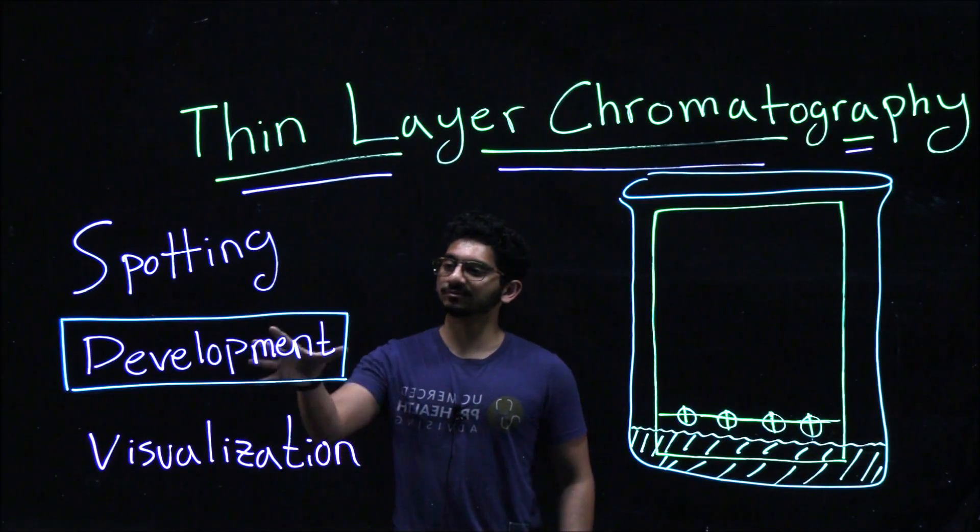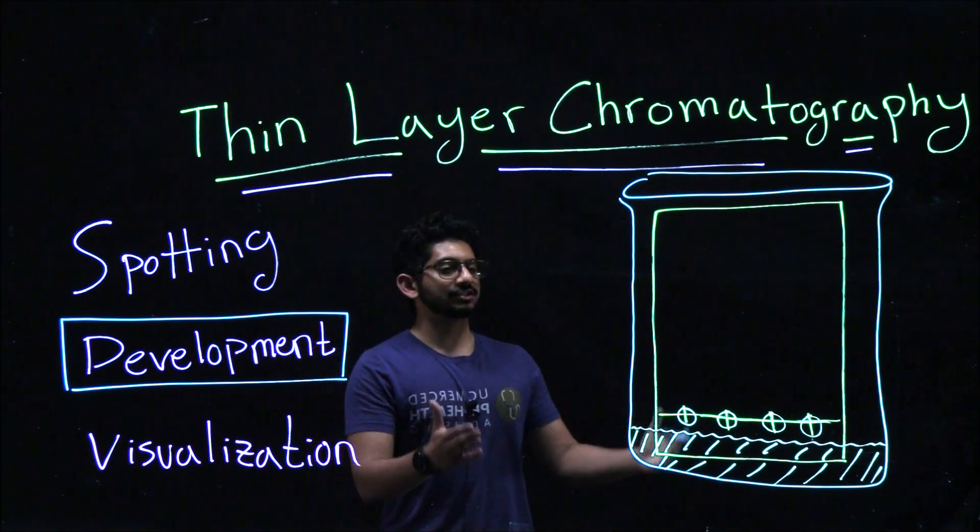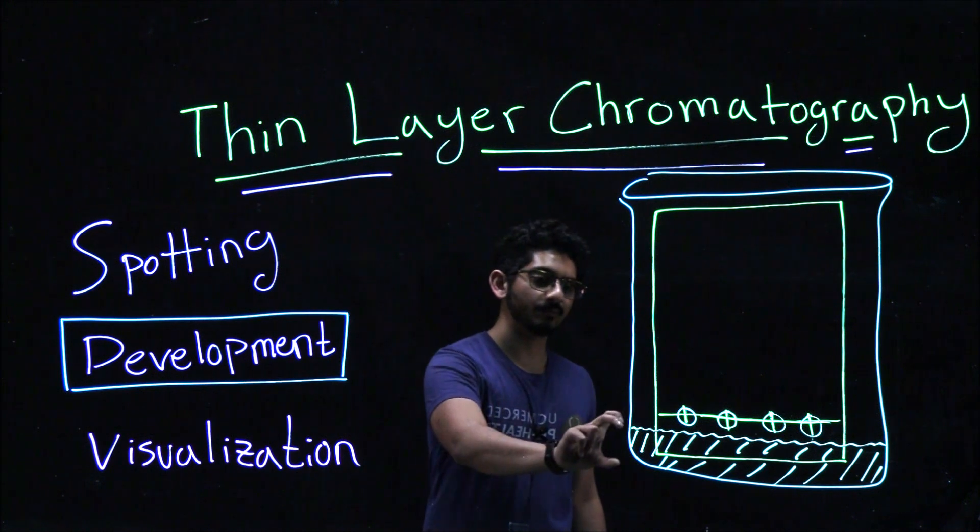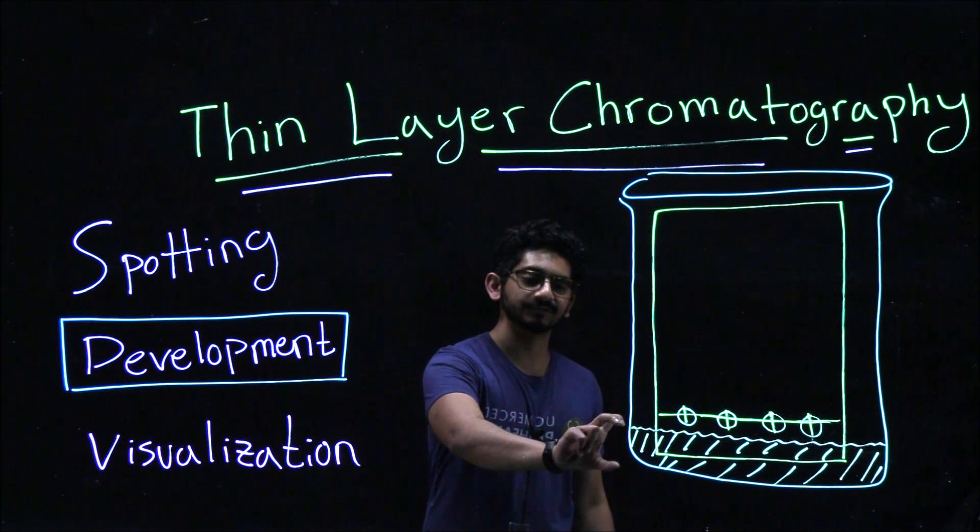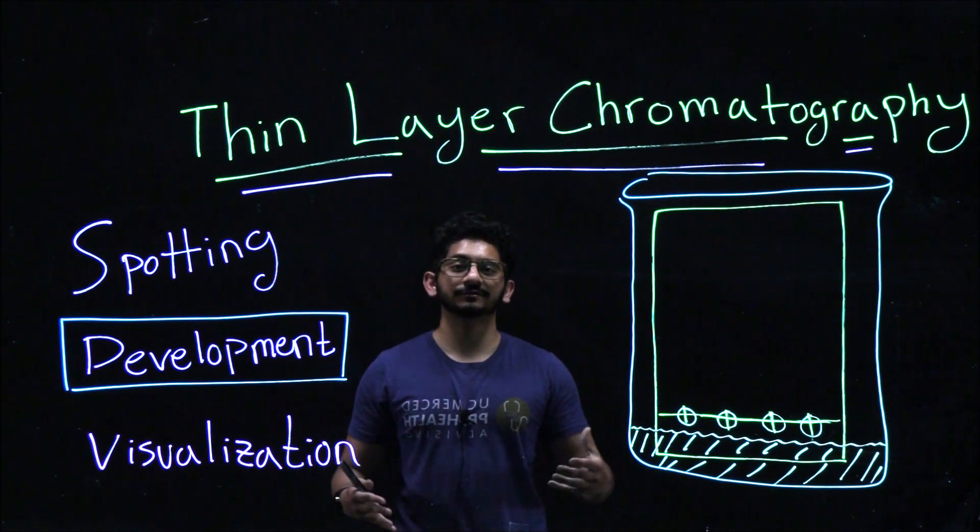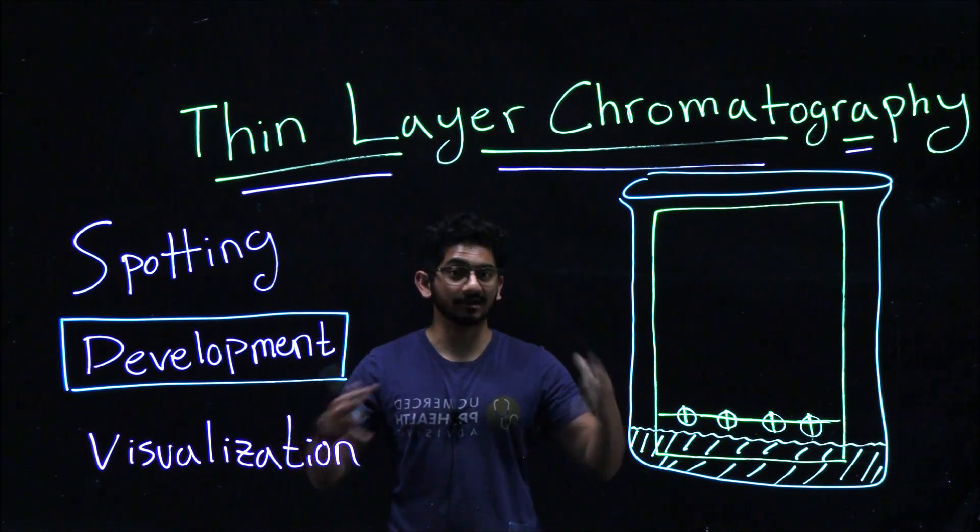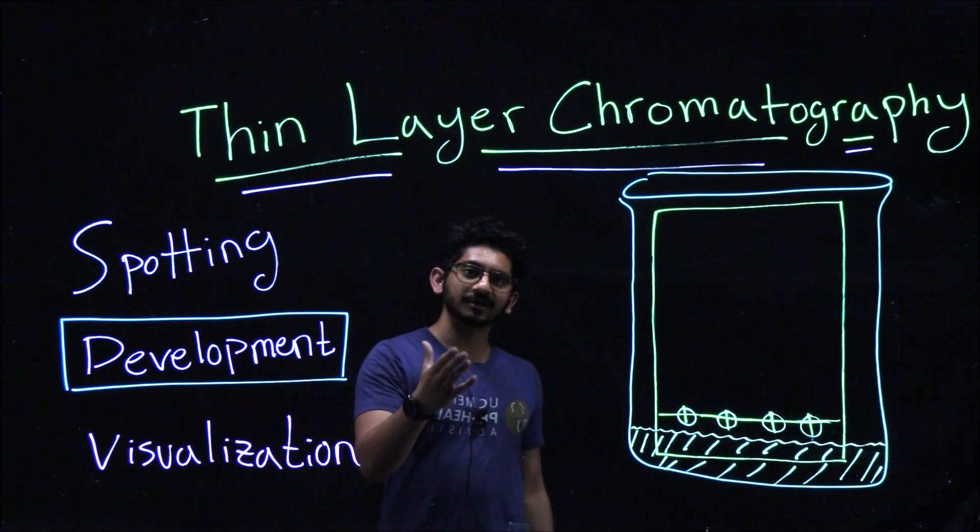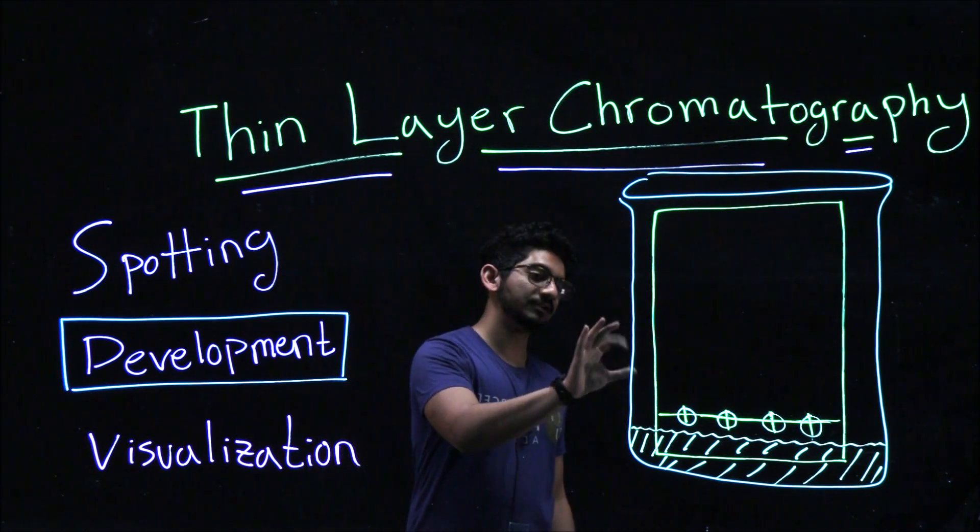The second part of our TLC is the actual development. We take a chamber, our TLC chamber, which is outlined here in blue, and we add our mobile phase, or our developing solution. It's important to cap this chamber and let the solution, your mobile phase, saturate the air inside the chamber, so you don't get incorrect readings.